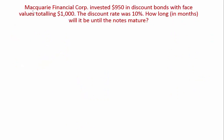Let's go through the last example. Macquarie Financial invested $950 in discount bonds with face values totaling $1,000. The discount rate was 10%. How long in months will it be until the notes mature? Let's write down what we know: your principal is $950, your face value or future value is 1000, and your discount rate is 10% per annum.